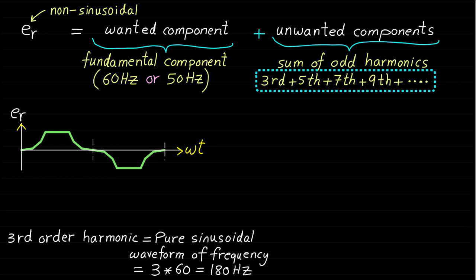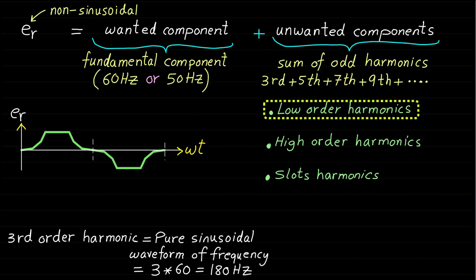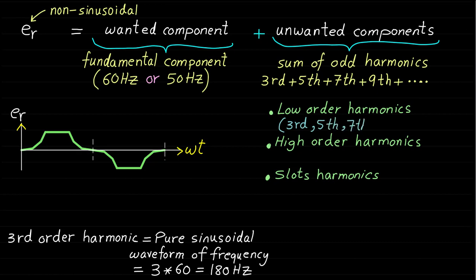These odd harmonics can be classified into three components. The first are the low-frequency dominant harmonics, or low-order harmonics. The second are the high-frequency harmonics, or high-order harmonics. The low-frequency dominant harmonics are represented by the 3rd, 5th, 7th, and 9th harmonics.